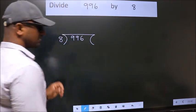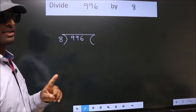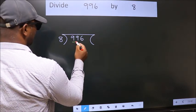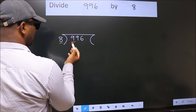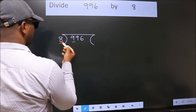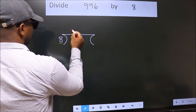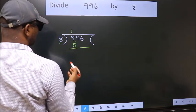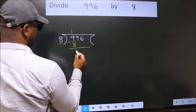This is your step 1. Next, here we have 9, here 8. A number close to 9 in 8 table is 8 once, 8. Now, we should subtract. We get 1.